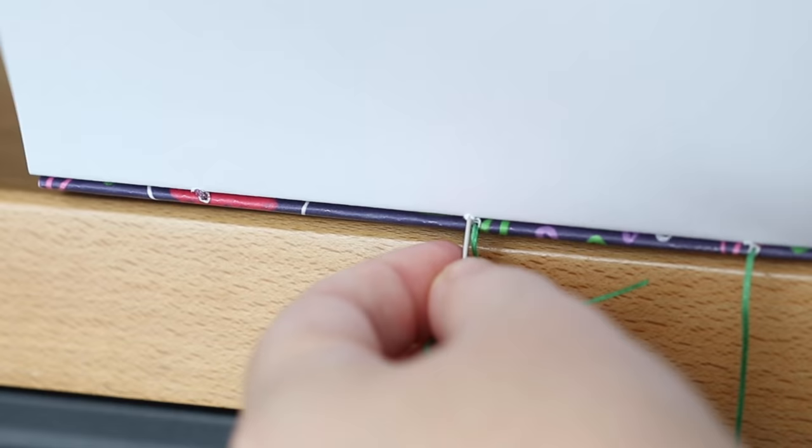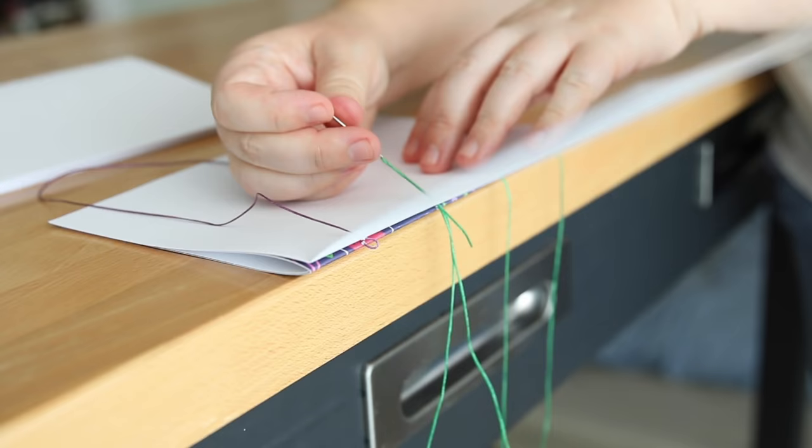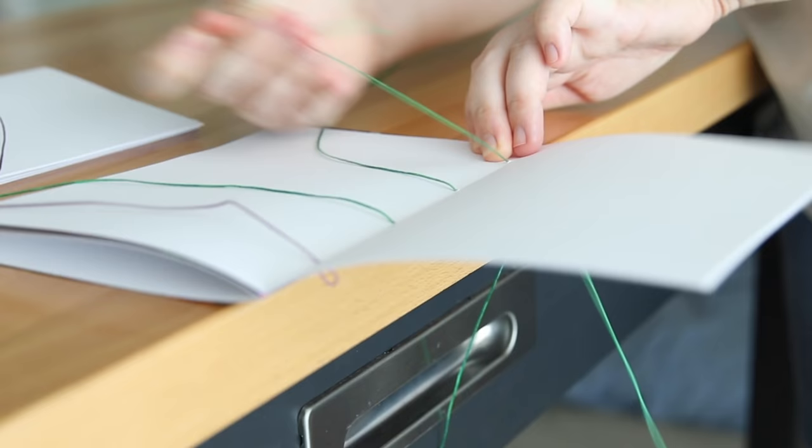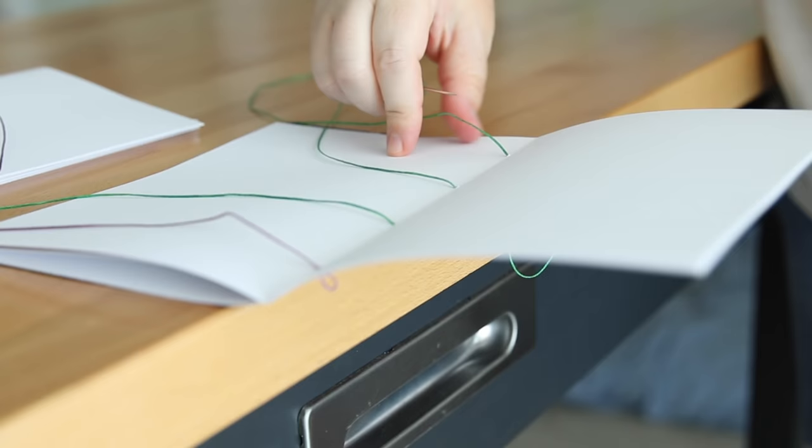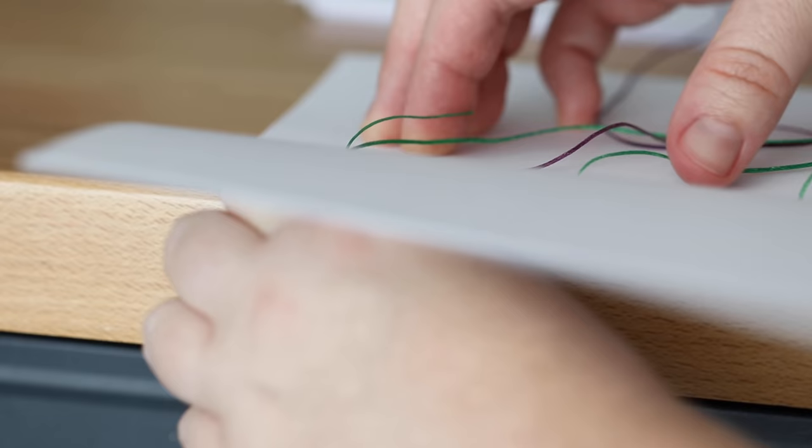Then returning all of the needles into the next signature. If you were binding on hardcovers with this method, you would instead go through the holes on the cover and then return into the new signature.